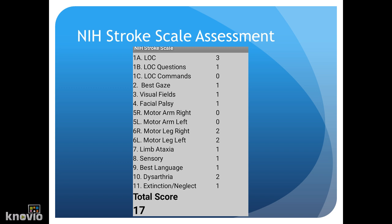For sections 5A and 5B, we're testing the motor drift of the arms. To test drift, we're going to have the patient hold their arms up above their head for 10 seconds. If one of the arms drops down, this is positive for a drift. They'll receive zero points for no drift.